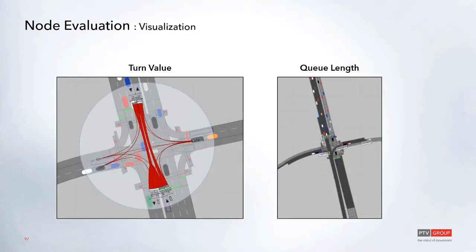For node visualizations, the first option is the turn value visualization, which shows a graphic around the node displaying volume by default for each turning movement — left turn, through, and right turn — for each approach. You can configure this for different attributes. You can also set up the queue length visualization to quickly see how queues are looking, as discussed in the very first Tool Tips episode.